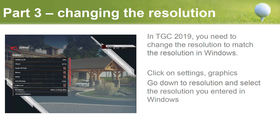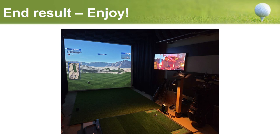The last setting you'll need to do if you're using TGC 2019 is change the resolution in the software as well. If you're using just the SkyTrak software, it automatically takes up the Windows resolution, so no change needed. In TGC 2019, open the game, click Settings, go to Graphics, scroll down to Resolution, and select the custom resolution you just entered in Windows. The end result will be a setup that's much more immersive, with an image that takes up the entire height of your screen without being squished.